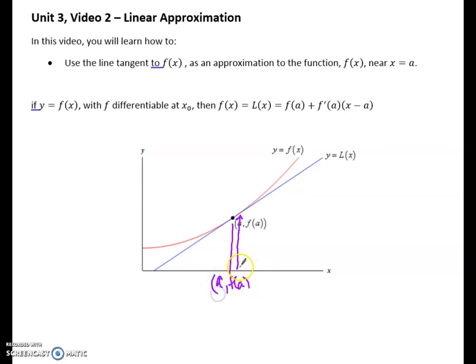If I want to find something just a little bit bigger than A, well, I could also find what it is on the line. And that line would be pretty close to what it would be on the curve. Not perfect, but close. Well, that's what we're going to do. And we're going to basically use our equation of our tangent line, which you guys already know.